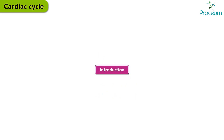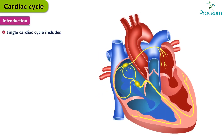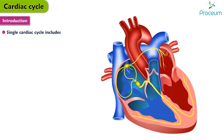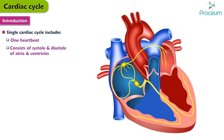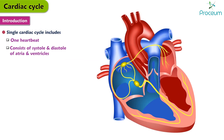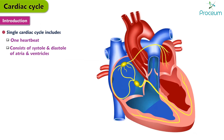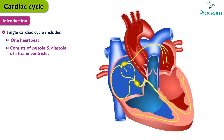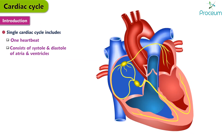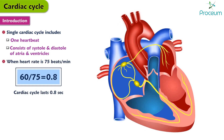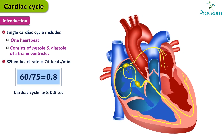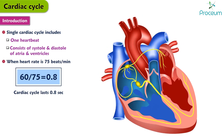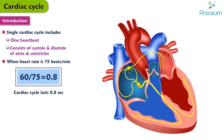Cardiac cycle — introduction. A single cardiac cycle includes all the events associated with one heartbeat and consists of systole and diastole of the atria plus the systole and diastole of the ventricles. When the heart rate is about 75 beats a minute, the cardiac cycle lasts about 0.8 seconds.